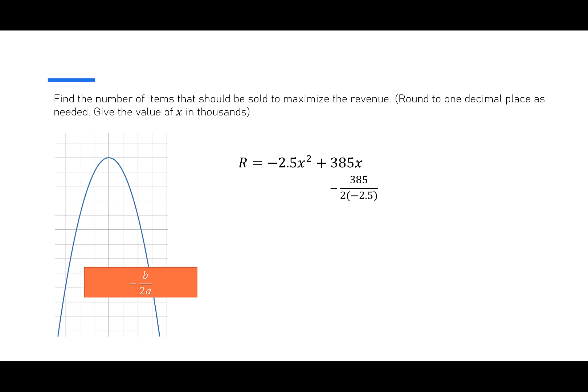Remember, we're selling items, so we can only have positive values as our answer. We can simplify this a little. The negative negative is going to be positive. 2 times 2.5 will give me 5. So I have this nice 385 over 5, which works out to 77.